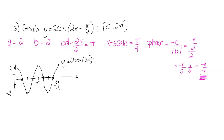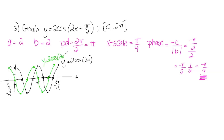Now I take that graph and subtract pi over four from every x coordinate, moving the graph left pi over four units. Since my x-scale is pi over four, every point just shifts over one unit to the left. I move each plotted point one unit left and then connect them. That is the function y equals two cosine two x plus pi over two.